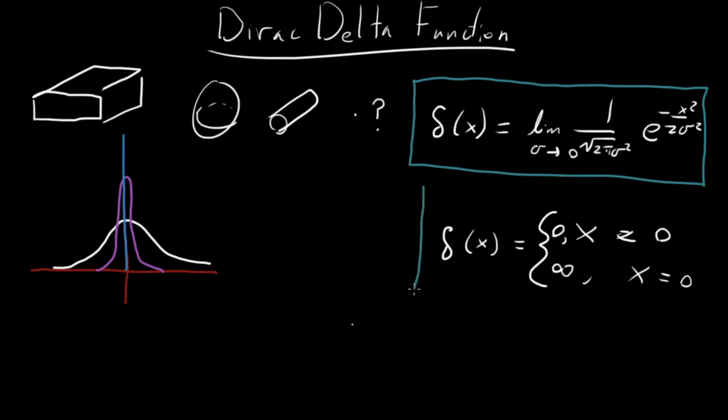And I'll circle this as well. So this is another property of the delta function, which is that if this is a distribution for a point particle, if you're off the particle, it's zero, if you're on it, it's infinity.